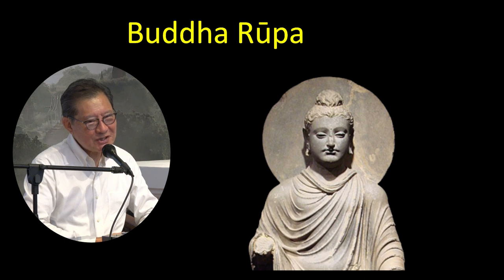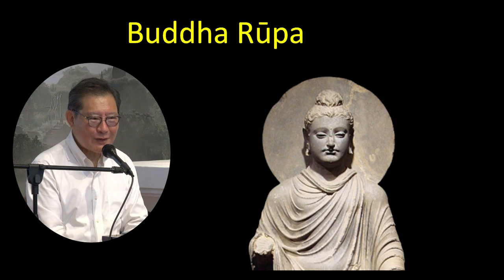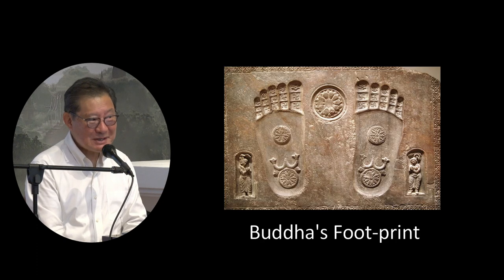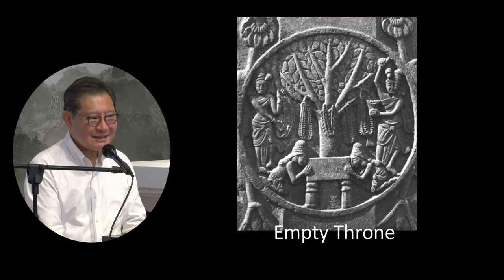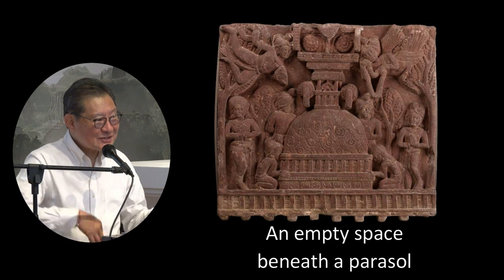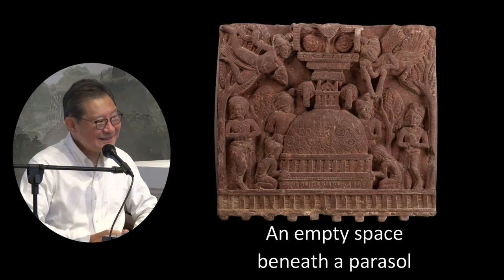If you look at the early Buddhist art that is in the BCs — or these days they call it Before the Common Era — the Buddha was not represented in a human form. The Buddha was represented in terms of a footprint, or sometimes an empty seat, a Bodhi tree, or an empty space meaning a parasol — which is what we call an umbrella. This is how the Buddha was depicted for about 500 years after he passed away, not presented in a human form.